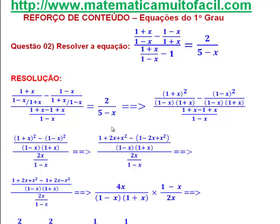Perceba que eu não vou mexer no segundo membro por enquanto — estou trabalhando apenas no primeiro membro. O que eu tenho aqui: 1 mais x que multiplica 1 mais x dá 1 mais x ao quadrado, sobre 1 menos x vezes 1 mais x. Menos 1 menos x ao quadrado — isso é 1 menos x vezes 1 menos x — sobre o mesmo denominador 1 menos x que multiplica 1 mais x. E no denominador, 1 menos 1 vai sumir, ficando 2x. Portanto: 2x sobre 1 menos x.